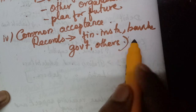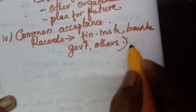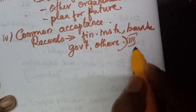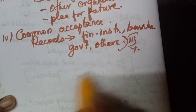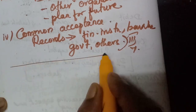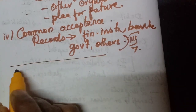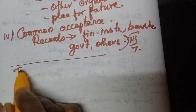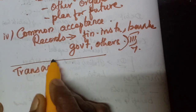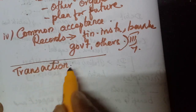So it is acceptable everywhere. There are only four points: accuracy, ascertainment of business results, comparative study, and common acceptance. Now we will learn the next heading — what is a transaction?